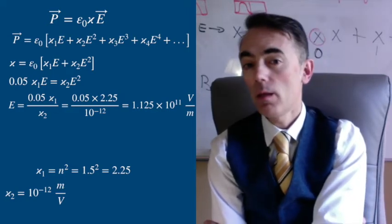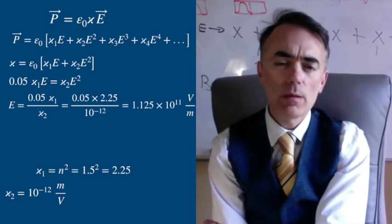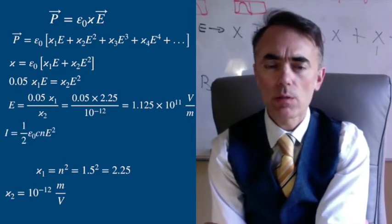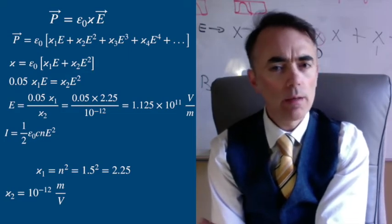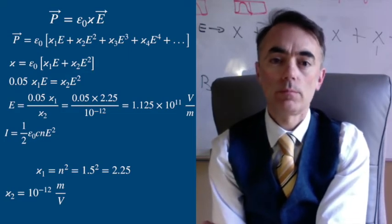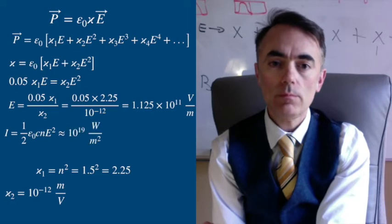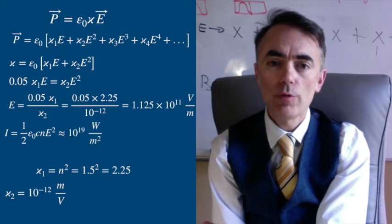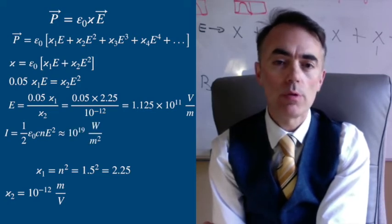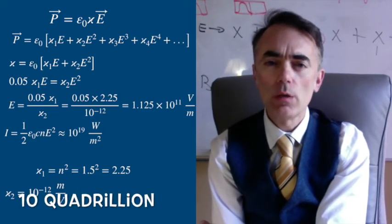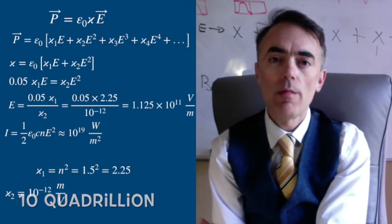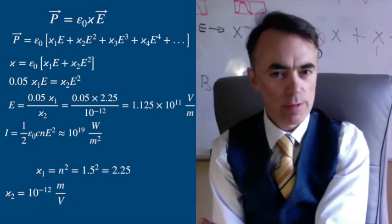Is that big? Well, the radiance for that electric field is one half of epsilon-not C n E squared, of the order of 10 to the 19 watts per square meter. About 10 quadrillion times more than the radiance we get from the Sun.